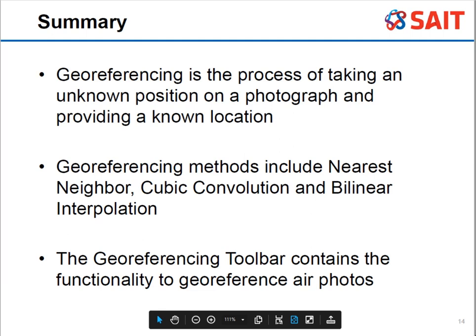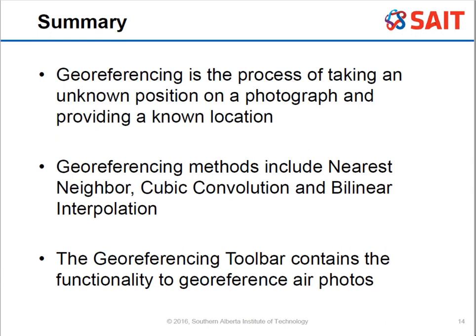Geo-referencing is simply taking an unknown photograph and putting it into a known location. Different geo-referencing methods include nearest neighbor, cubic convolution, and bilinear interpolation. These are based on resampling, which wasn't covered in the main PowerPoint, though they do appear in the summary. There's also a geo-referencing toolbar that allows you to geo-reference air photos, and you'll have a chance to do that.